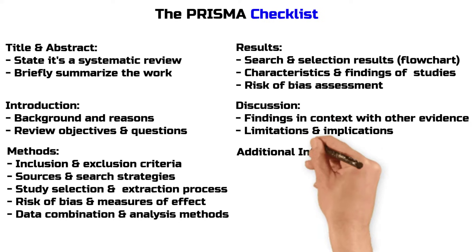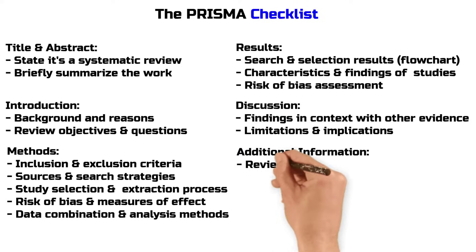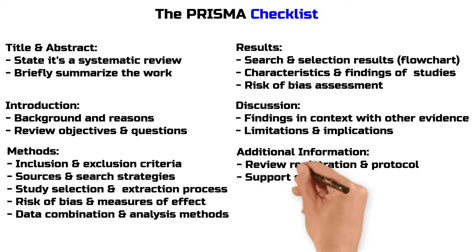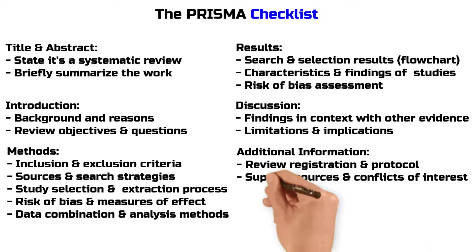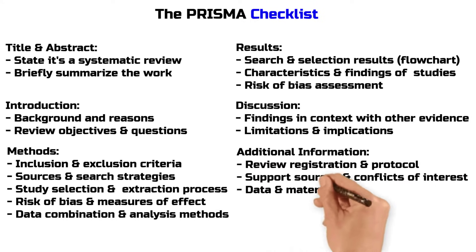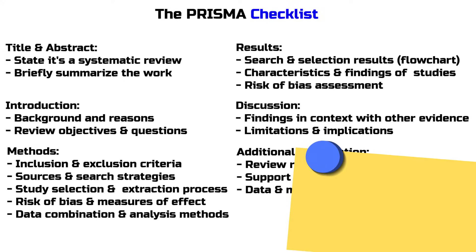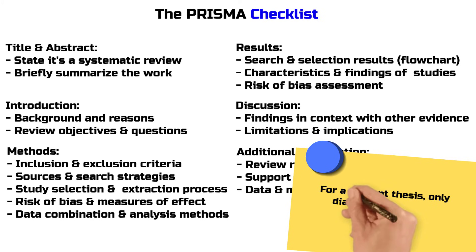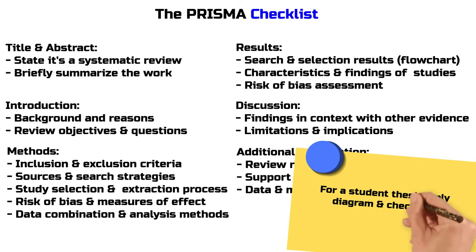Additional information: provide information on the registration and protocol of the review, list sources of financial and non-financial support, disclose any potential conflicts of interest among the authors, and indicate the availability of data and materials. Other PRISMA resources are only relevant if you plan to publish your research at a very high level or conduct complex meta-analyses. If you are a student, the diagram and the checklist are most relevant.